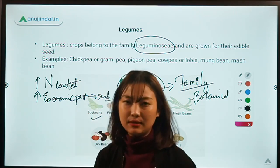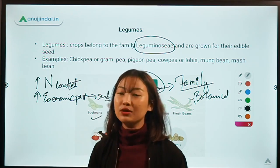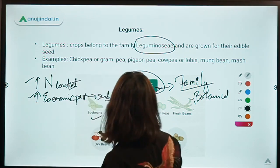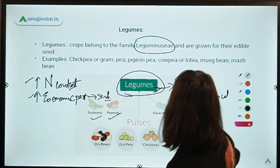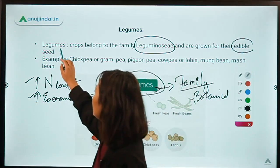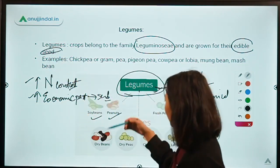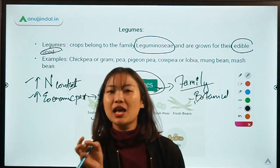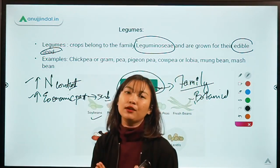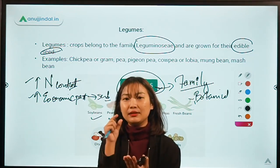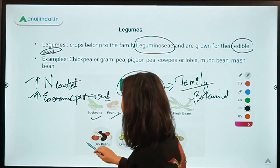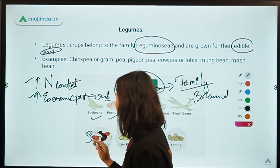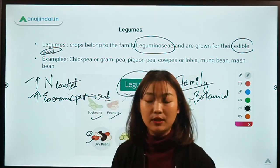We'll discuss nitrogen fixation more as we go forward with the course. For now, understand that legumes are mainly grown for their edible seed. Even with peas, the round thing you see is the seed — we don't eat the outer covering but the seeds themselves. Similarly with pulses like dal, we eat only the seeds and not the leaves of the plant.